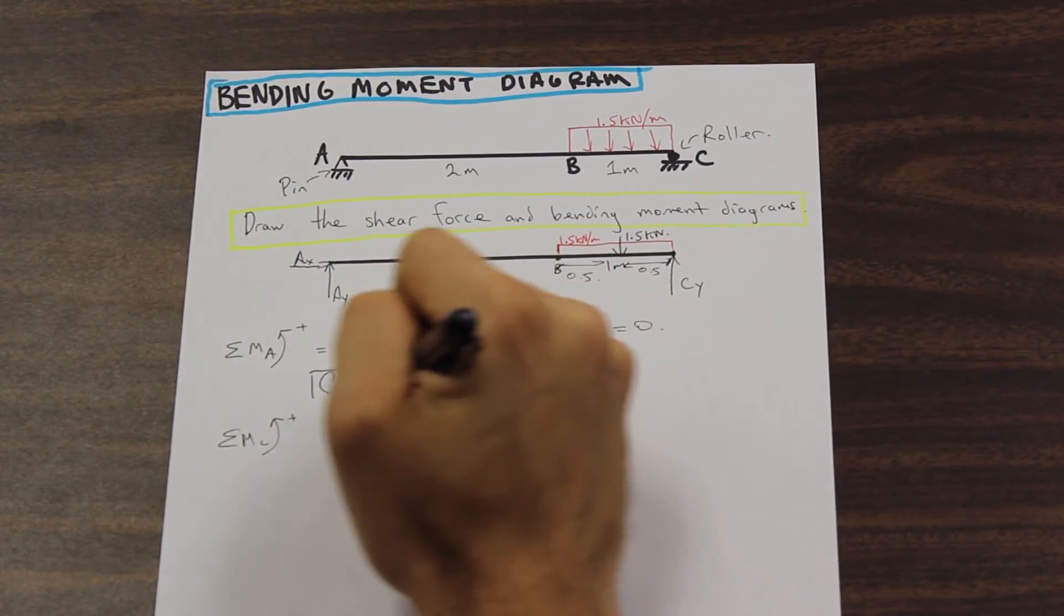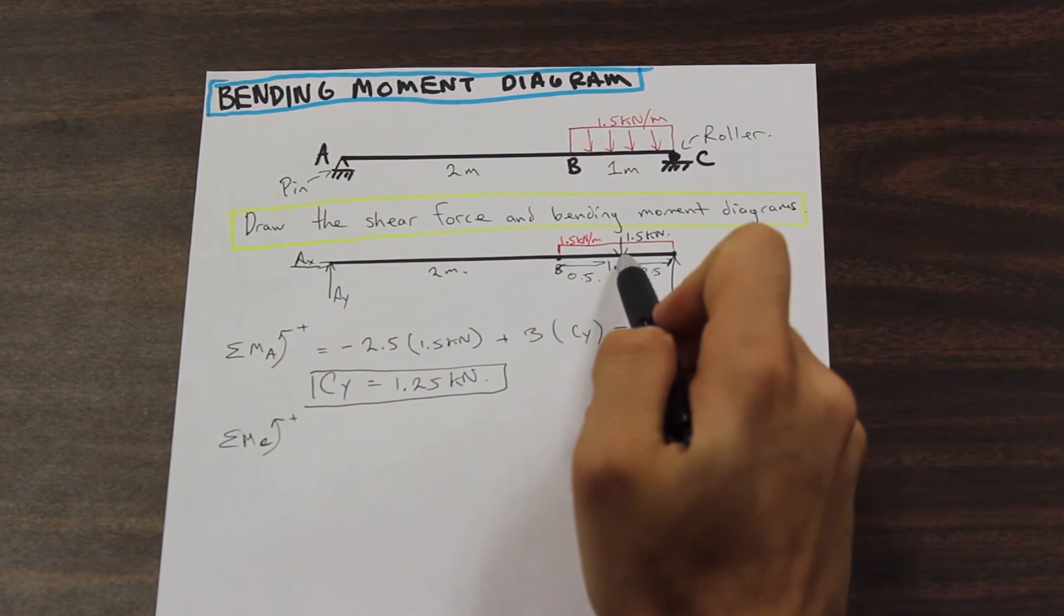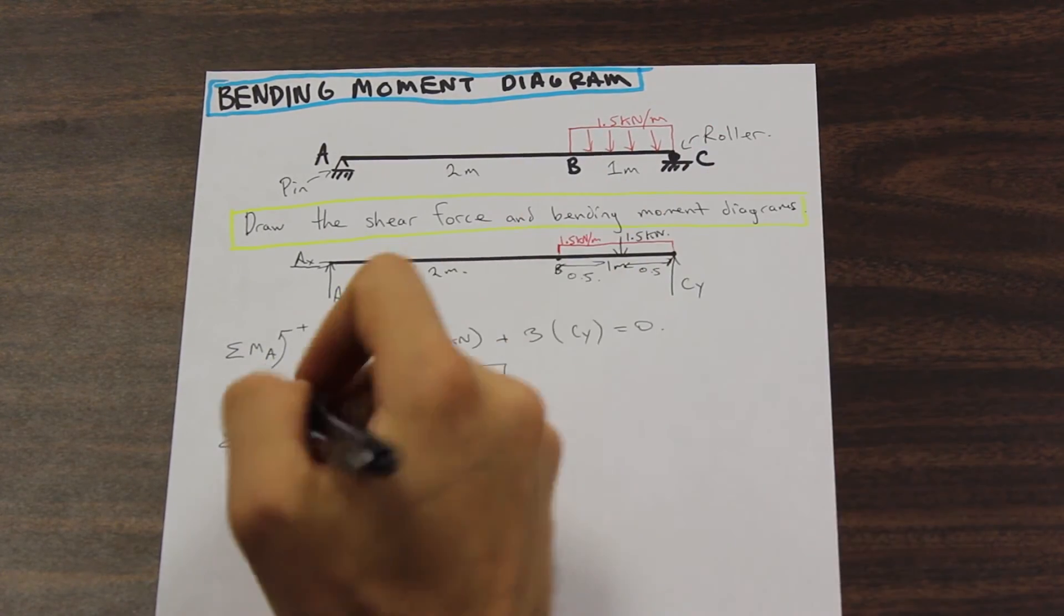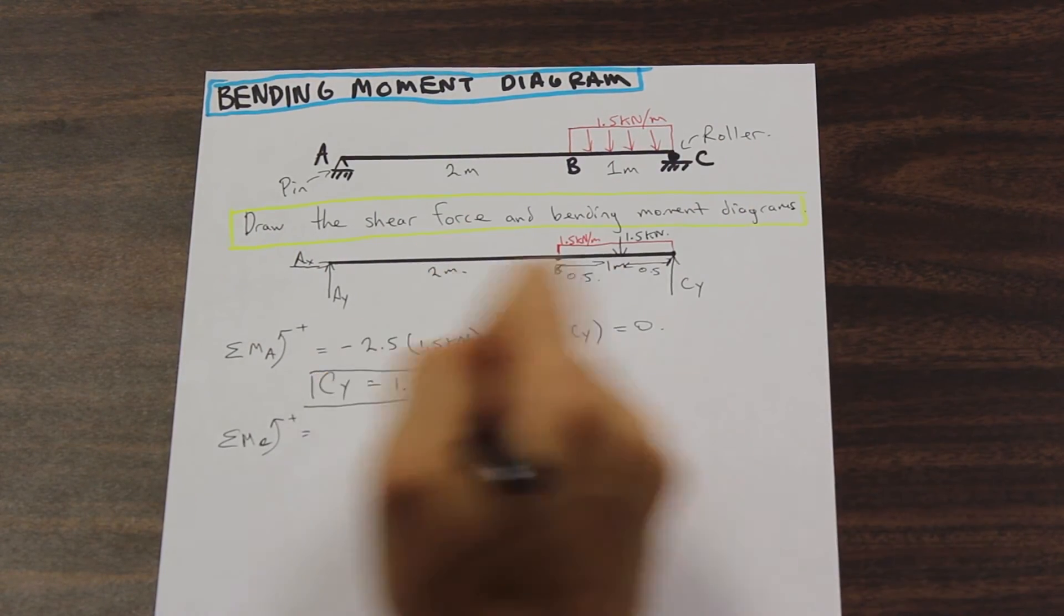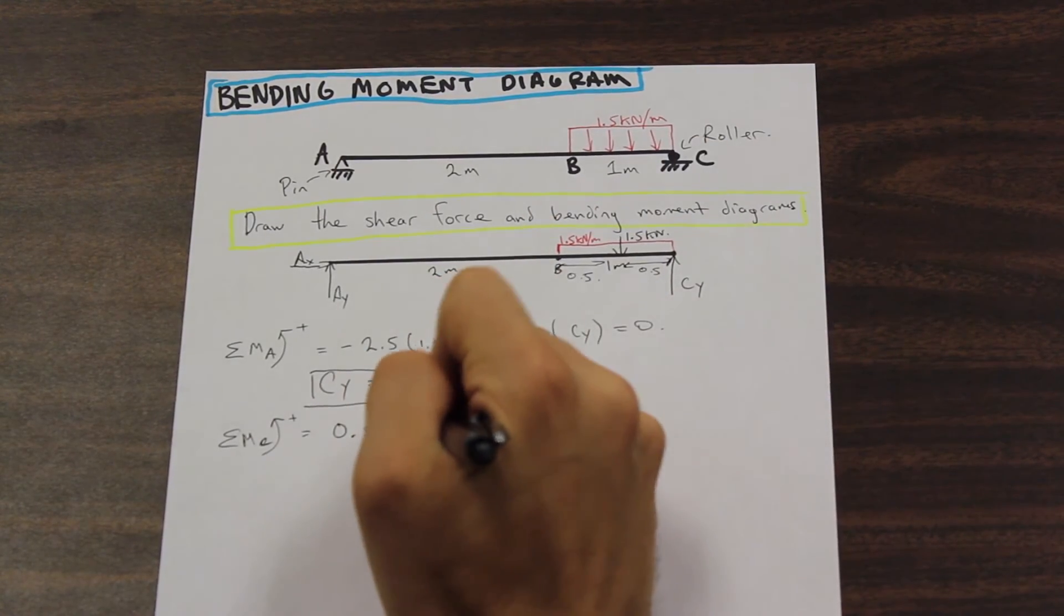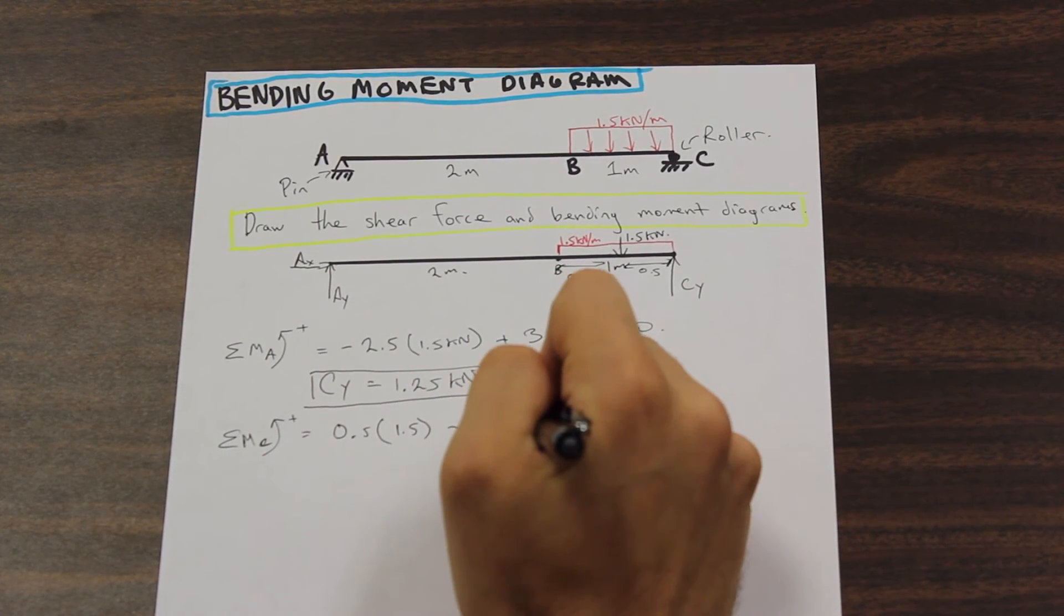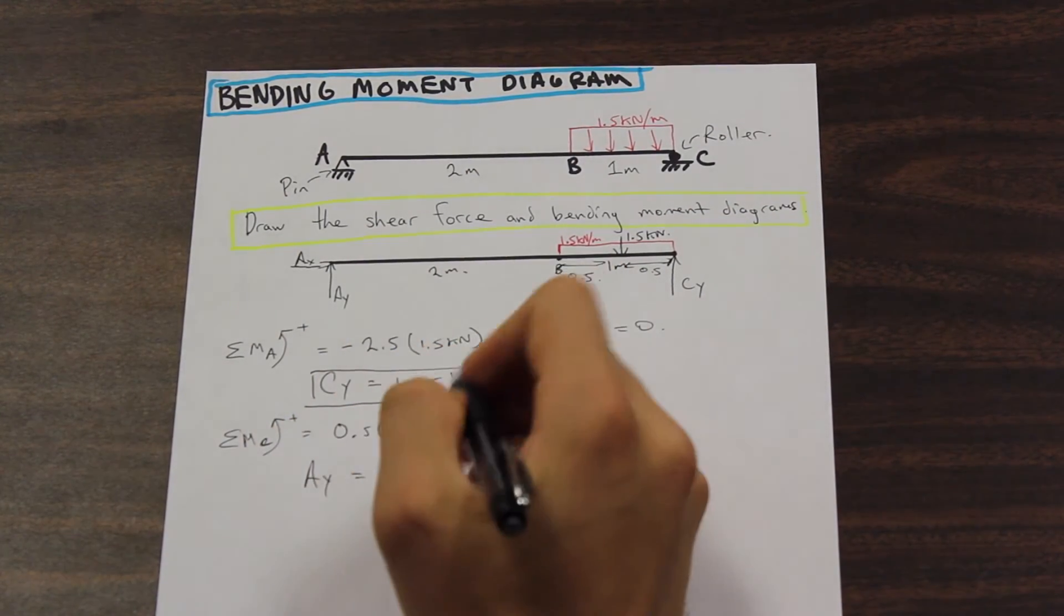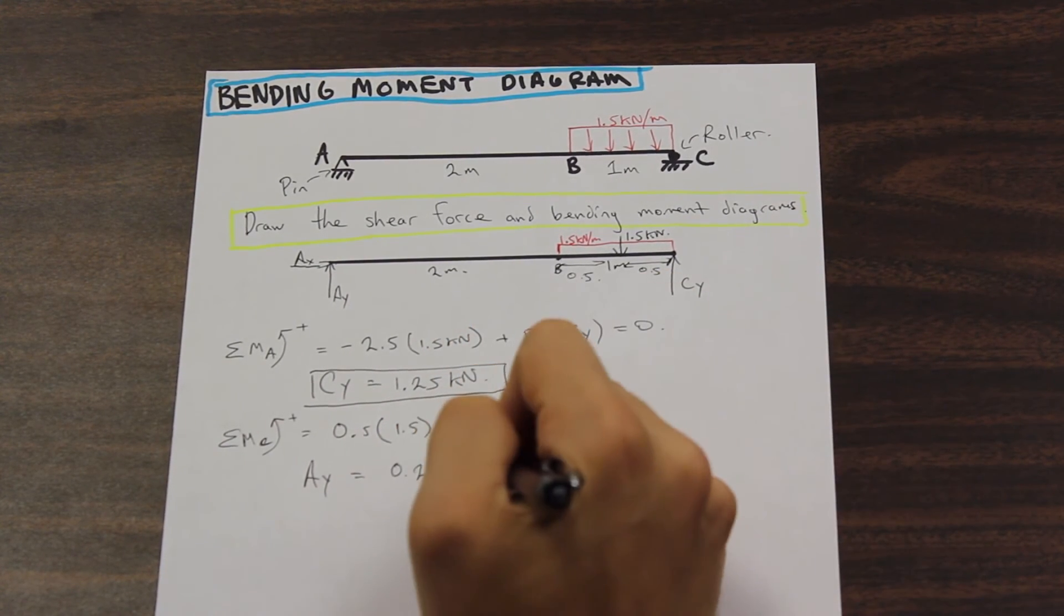Let's start by taking the moment at C. So the moment at C, well, we have this 1.5 kilonewton force, and that's 0.5 meters from C. And what direction is that? Well, that is in the positive direction, right? It's acting counterclockwise. So we are going to say positive sign, 0.5 meters times 1.5 kilonewtons. And we have AY, which is in the negative direction. So then we have AY times 3 meters. And that's equal to 0. And what do we get from that? We are going to get that AY is equal to 0.250 kilonewtons.